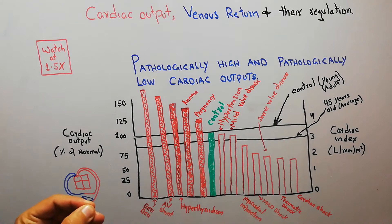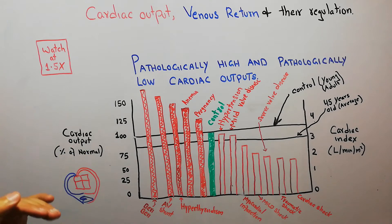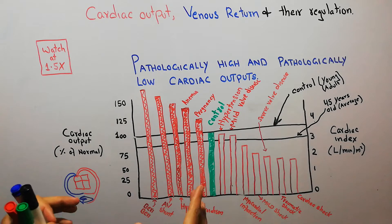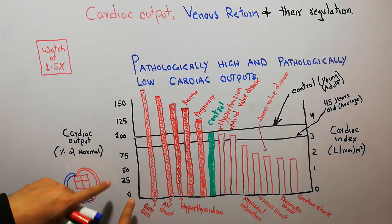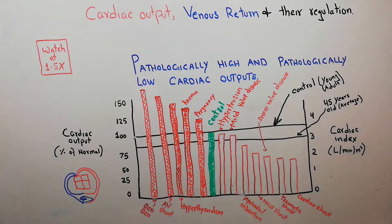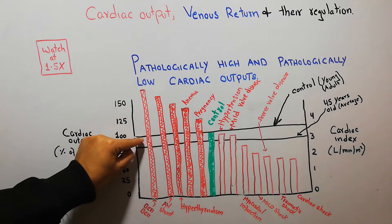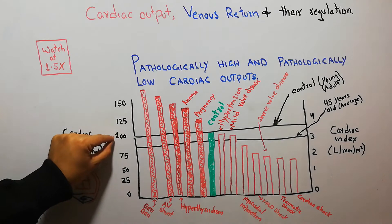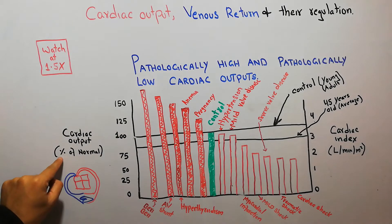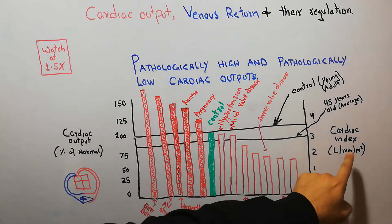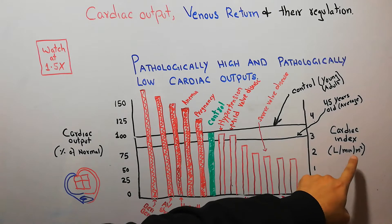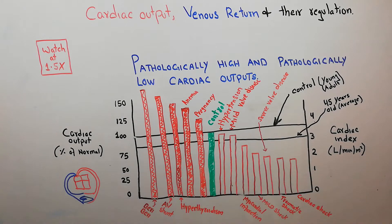The first condition leading to pathologically high cardiac output is beriberi. In this graph we have plotted the cardiac output as a percentage of normal, where 100% represents the control point. We have also plotted the cardiac index, which is cardiac output in liters per minute per square meter of body surface area.